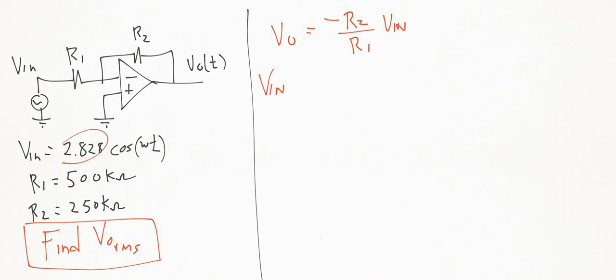So that's this guy here, that's the peak. And we're going to divide it by the square root of 2. And when you do that, we'll get the RMS value.